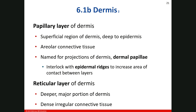The primary connective tissue of the papillary layer is areolar. Areolar is a loose connective tissue. Blood vessels love to invade loose connective tissue, so in the areolar connective tissue you should see a relatively high percentage of vascularity — meaning there are a lot of blood vessels.